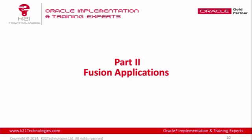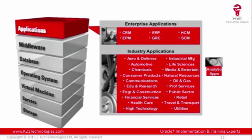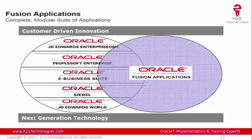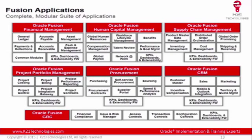Now, what is Fusion Applications? A Fusion Application is the next-generation application suite from Oracle, designed and developed on top of Fusion Middleware. It provides the best functionality from existing Oracle applications. Any Fusion application — whether CRM, HCM, or SCM — is developed on top of Fusion Middleware. Oracle took the best of its products, including PeopleSoft, eBusinessSuite, and Siebel, and developed a separate application suite based on Fusion Middleware called Fusion Applications.